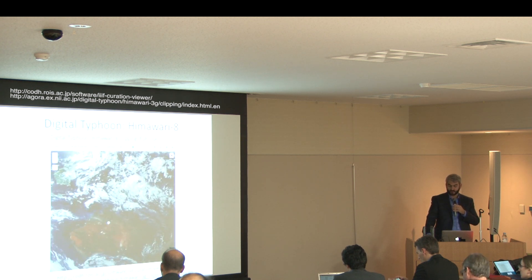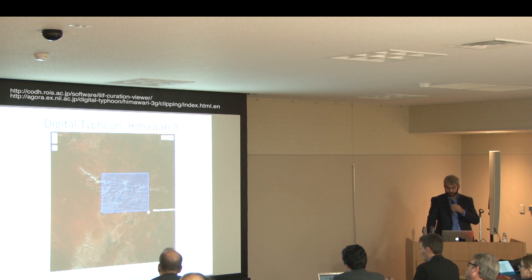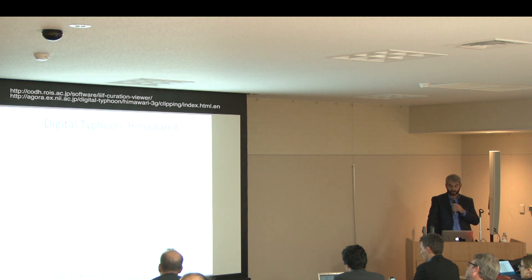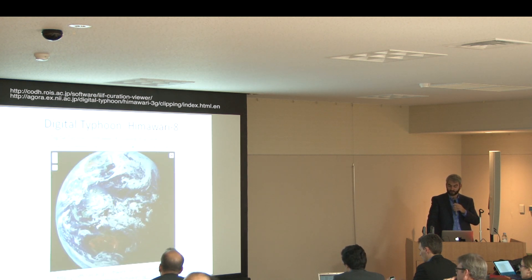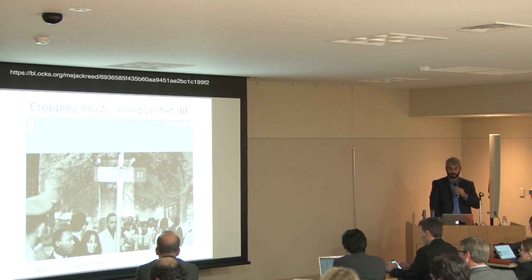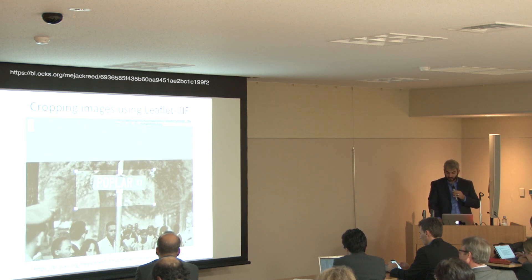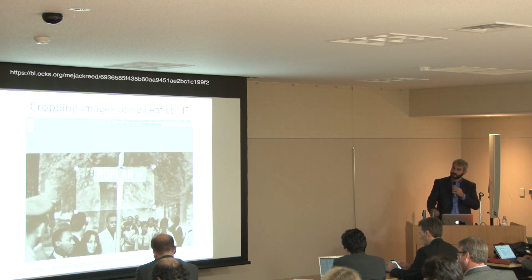Here is a great use case of IIIF and Leaflet working together with plugins. Digital Typhoon provides users the ability to select a clipping from Himawari 8 satellite photos — integrating Leaflet fullscreen and Leaflet draw plugins within the IIIF curation viewer. Users can zoom into an area of the earth, create a selection, and export it. Because Leaflet IIIF is built on the mapping library, layering images is easy — for example, a folio from a manuscript with a missing graphic can have the cutting overlaid from another library. You can also add a cropper, and the URL updates as the user pans and zooms.